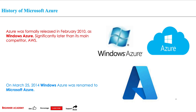Azure was formally released in February 2010 with the name Windows Azure, which is significantly later than its competitor AWS. Obviously, AWS always had a first-mover edge over Azure.